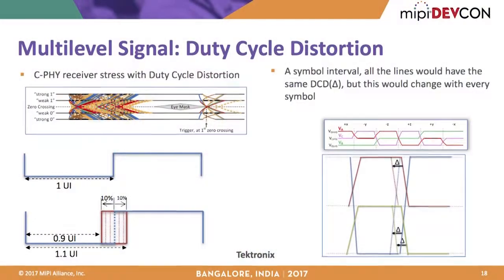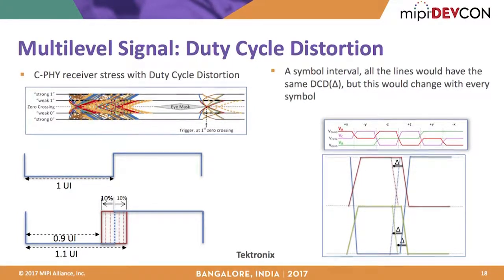One specific topic related to duty cycle distortion (DCD) generated significant discussion during the drafting of the first C-PHY CTS. Most high-speed serial standards use sinusoidal jitter to stress the receiver for jitter tolerance testing. However, given C-PHY's clock recovery nature — where the trigger point is computed per symbol from three differential waveforms — the system is inherently immune to sinusoidal jitter. Duty cycle distortion was therefore explored as an alternative stress mechanism.